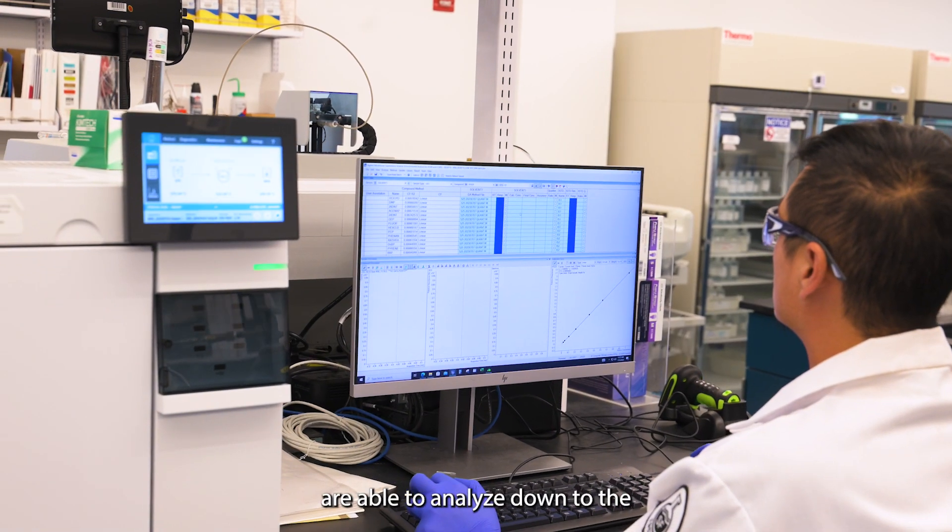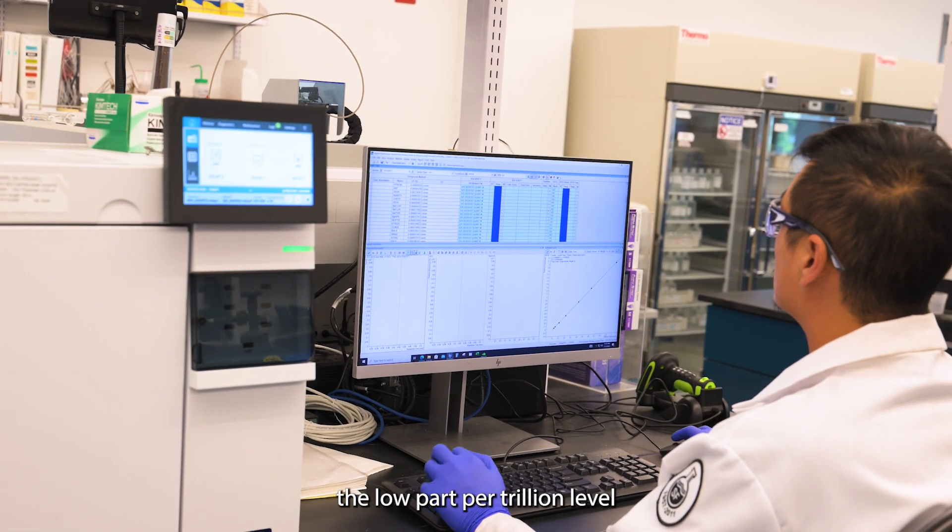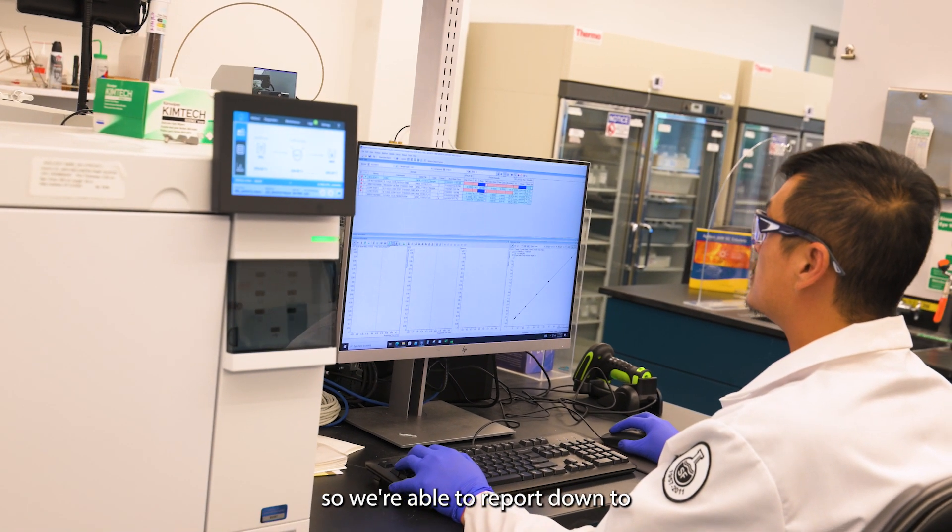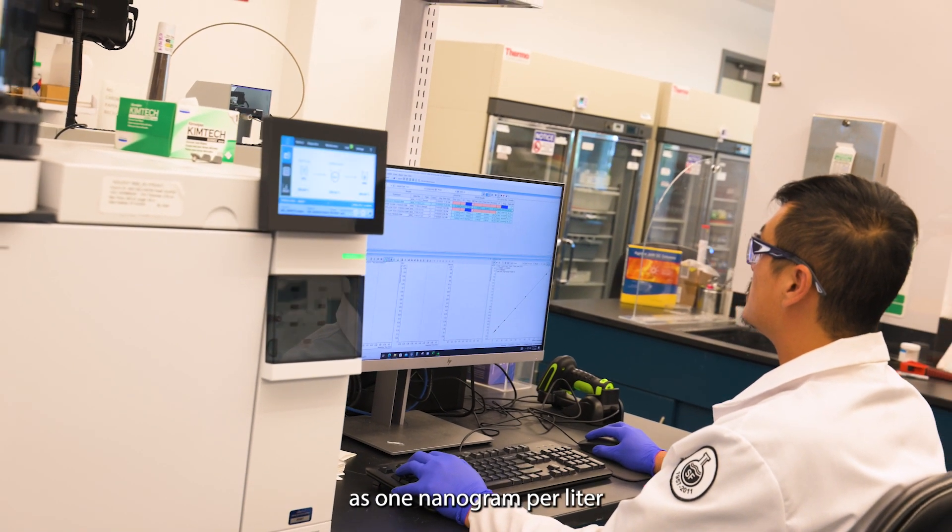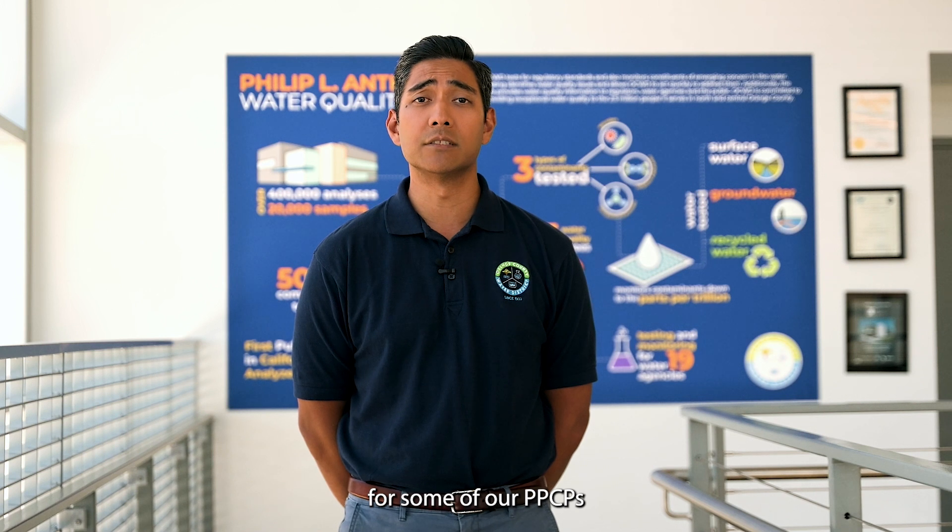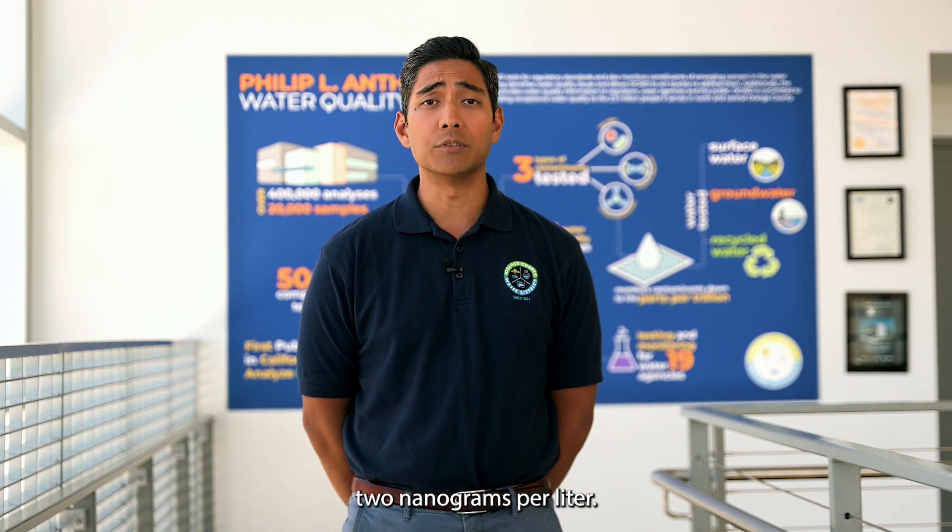For our SCIEX instruments, we're able to analyze down to the low parts per trillion levels. We're able to report down to even as low as one nanogram per liter for some of our PPCPs, and all 29 of our PFAS compounds we report down to two nanograms per liter.